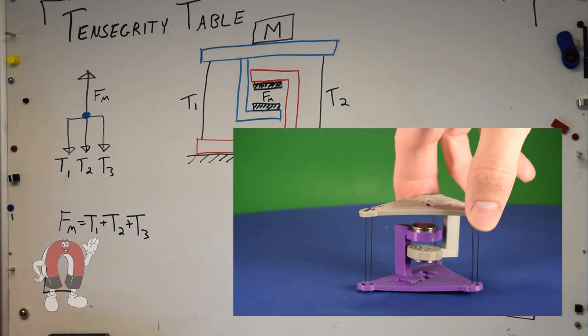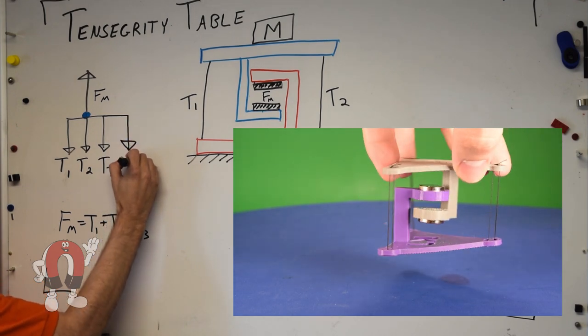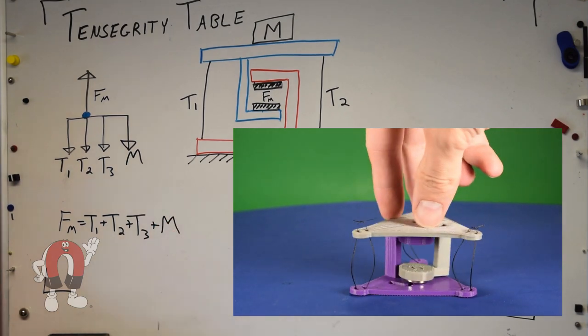Of course, two magnets separated by some gap only attract with some amount of force. If we add too much weight to the top, the table should collapse. There will be nothing holding it up.